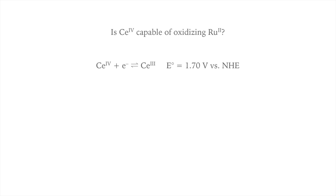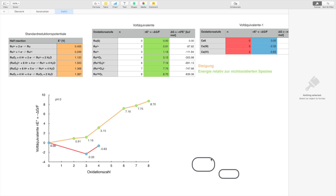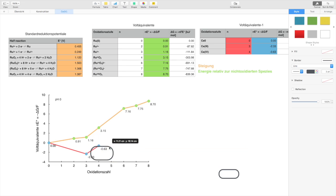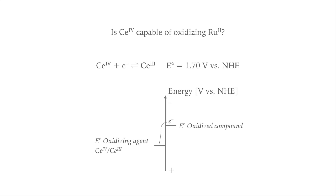The element cerium in its oxidation state 4 is a strong oxidizing agent. Is cerium 4 capable of oxidizing ruthenium 2? The reduction potential of cerium 4 to cerium 3 is 1.7 volts. Therefore, the slope between cerium 3 and cerium 4 is 1.7 on the Frost diagram. The reduction potential of the oxidizing agent has to be more positive than the reduction potential of ruthenium for the reaction to take place. Only then the electrons flow downhill in energy.